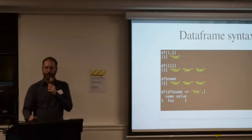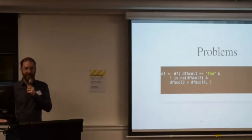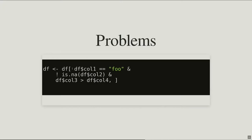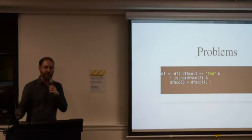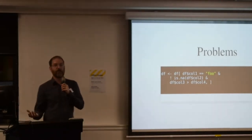You can start doing complex queries — checking a column equals 'foo', checking that something is not NA (NA being an empty/null value), or that one column is greater than another. But the syntax starts getting quite messy. Note the comma — anything after it is the list of columns you want back, so you often just put the comma by itself to get all columns. If you leave the comma off, it means something completely different and you'll get very confused. This is referred to as base R syntax.